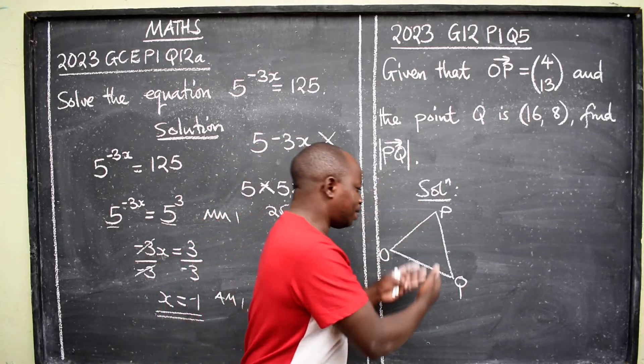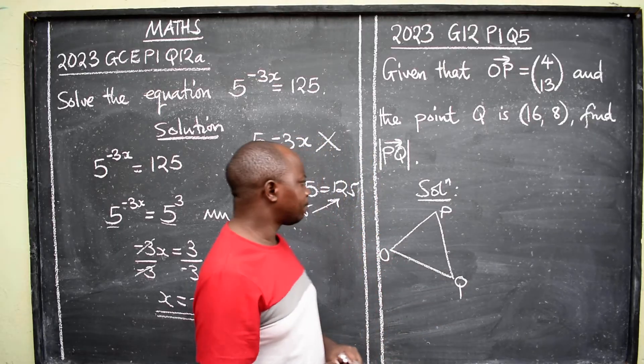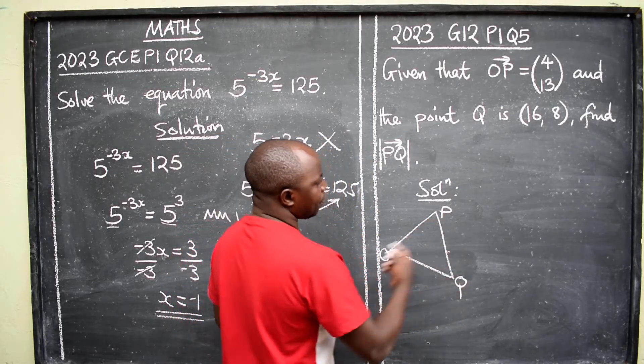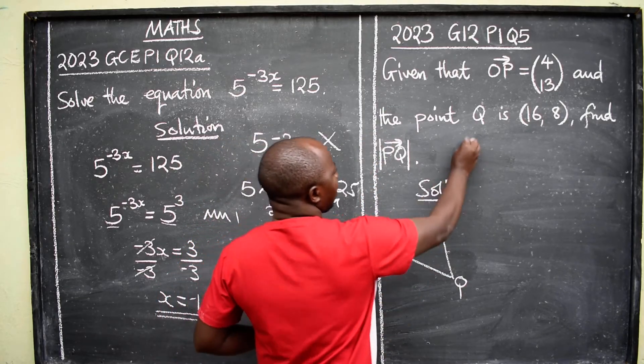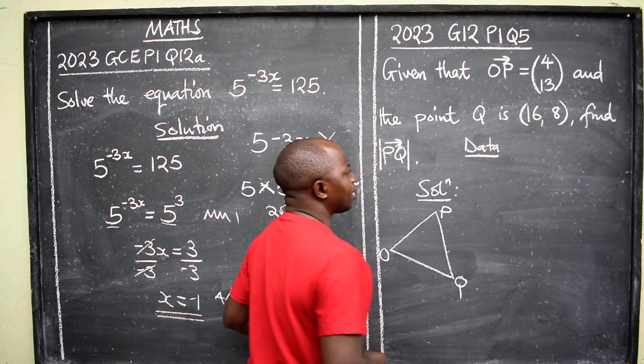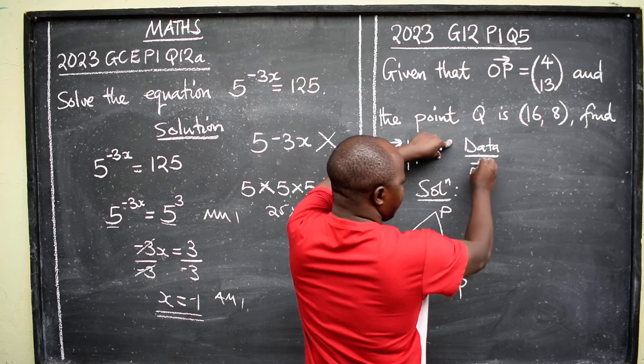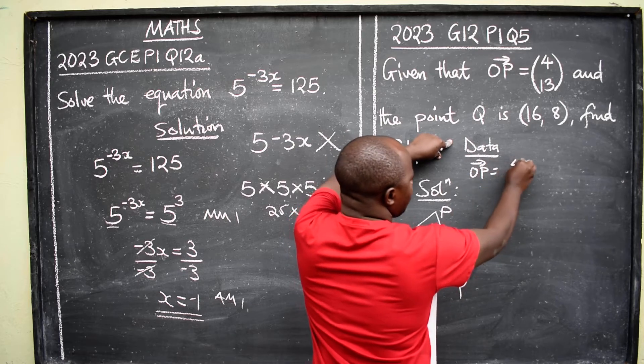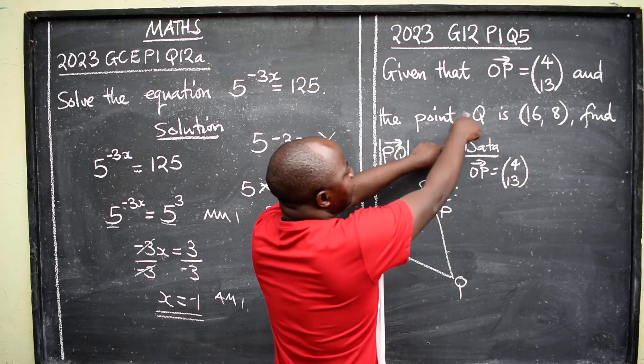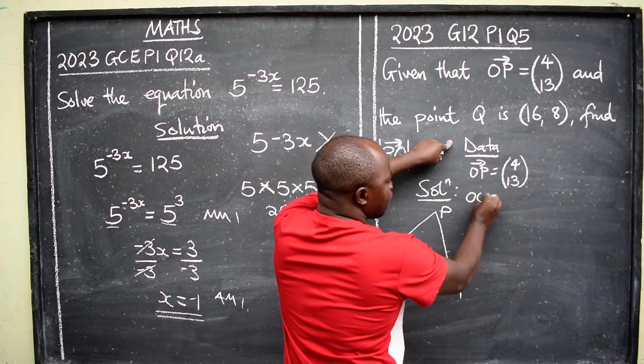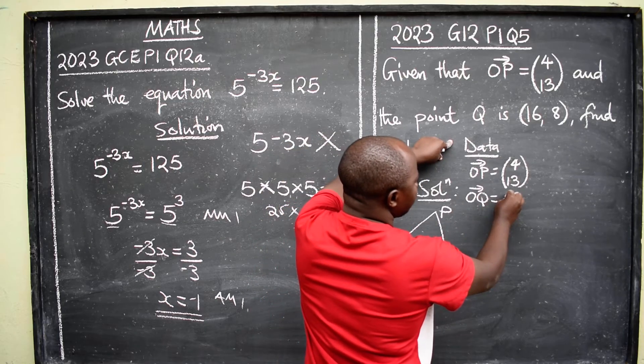So we have O, P, Q. If you are given A, B, use A, B. Don't say Mr. Lalunga was just using P, Q. Any letter can be used. So now we have OPQ. Let's now gather information, our data here. We have OP vector OP which is equal to 4, 13.